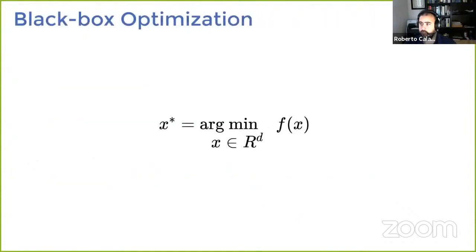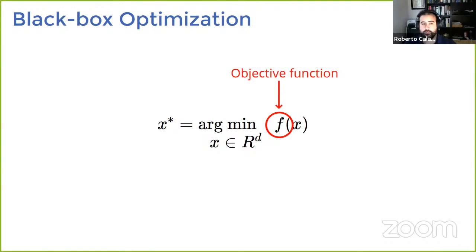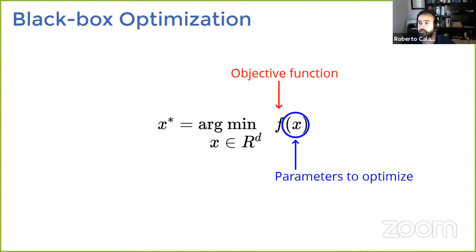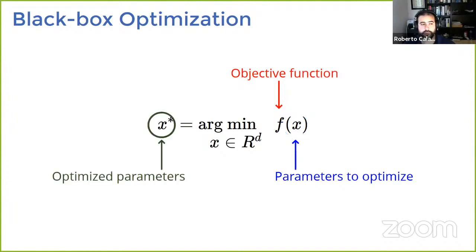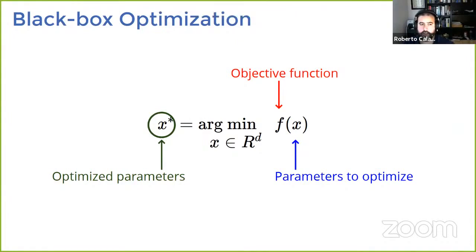Let's start with the standard notation used in optimization. We have an objective function f that we want to minimize, and a set of parameters x — variables we can control — and we want to find which one is the best. At the end we get x-star, the optimal set of parameters to deploy in our real system. For this talk, we typically assume the parameters are continuous, though the algorithms also work with discrete parameters in theory.